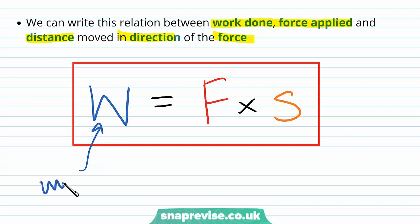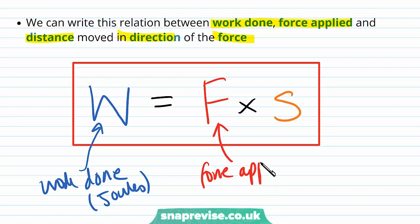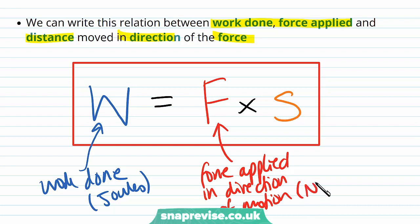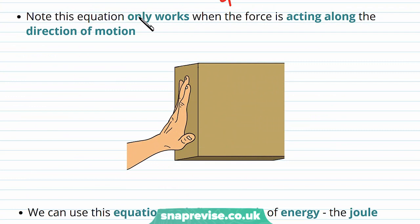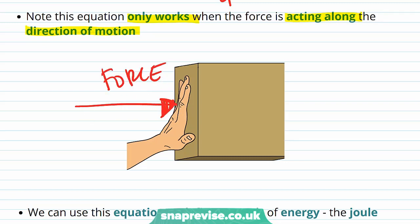W is the work done and we give work done in joules because it's an energy transfer. F is the force applied in the direction of motion, given in newtons. S is the distance moved in meters. Note this equation only works when the force is acting along the direction of motion — the force must be parallel to the direction of motion, otherwise this equation can't be used.